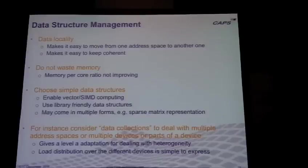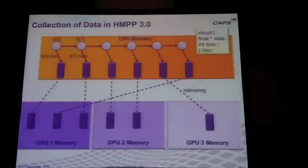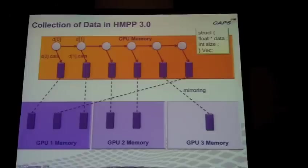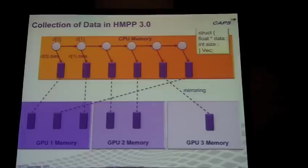In HMPP we promote data collections. A data collection is a set of data you can index in parallel — the elements are serializable, meaning contiguous in C or Fortran. What you can do in HMPP is create mirrors of those data on different devices, allocating different pieces of data across, for instance, three GPUs. One important thing is that when you express where the work goes, it must be independent from the allocation of data.